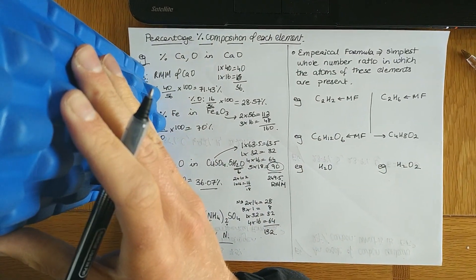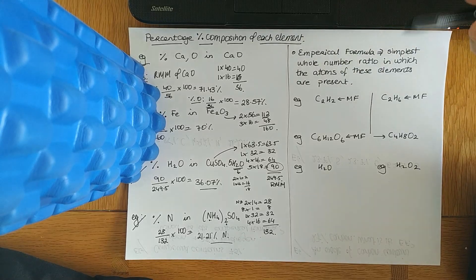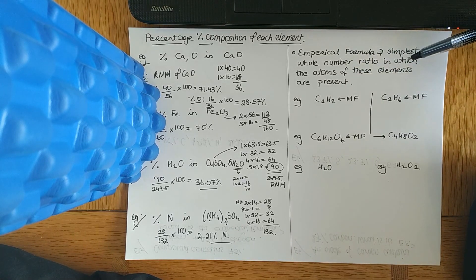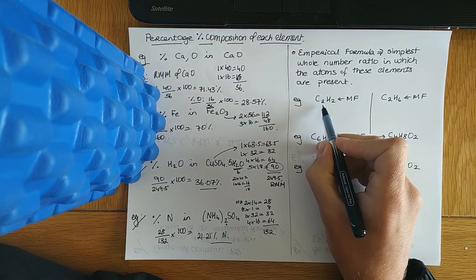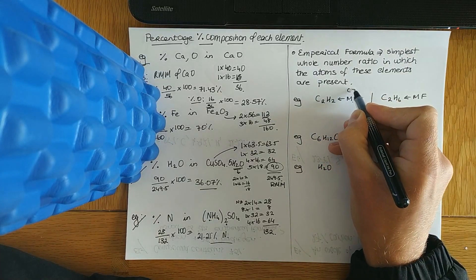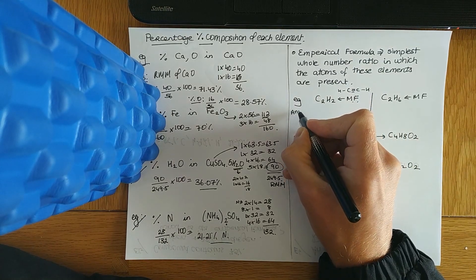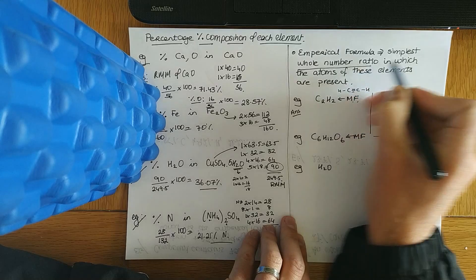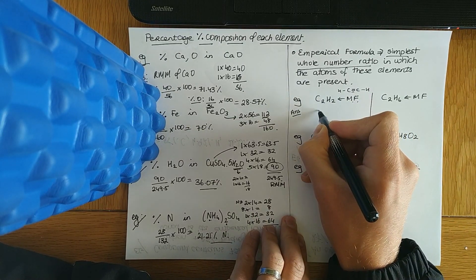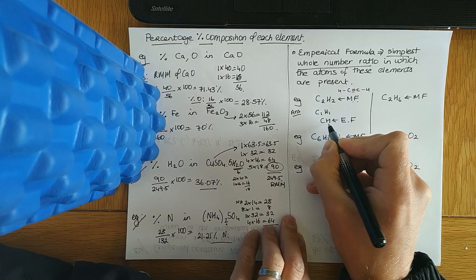Next thing is looking at the empirical formula. You need to know the definition of empirical formula, molecular formula, and structural formula. The empirical formula is simply the simplest whole number ratio in which atoms of the elements are present — it indicates what elements are present and the simplest whole number ratio.